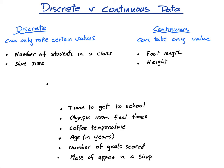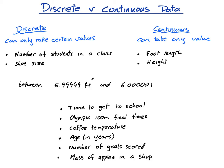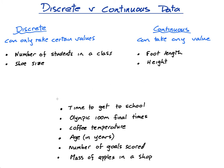...between 5.9999 feet and 6.0001 feet, then yes, there could be many people in that range. But there are zero people who are exactly six foot. And that's quite important.